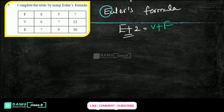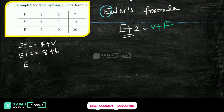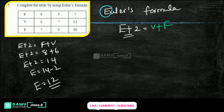Using Euler's formula: E + 2 = F + V. So E + 2 = 8 + 6. That gives E + 2 = 14, therefore E = 14 − 2 = 12. So the number of edges is 12.